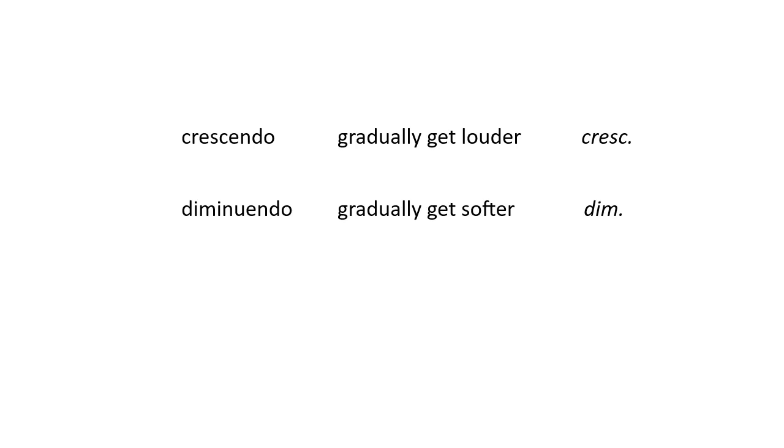Dynamics can change suddenly or they can change gradually. When they change gradually, the Italian terms crescendo and diminuendo are used. It is customary to give these two terms by their abbreviations in italics in a score. They are followed by periods, even though the abbreviations F, P, and M are not followed by periods.